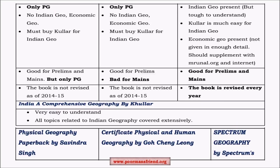Looking at previous exam trends: Savindra Singh helps for both prelims and mains but only for physical geography. Goh Cheng Leong is not ideal for mains because not every concept is in enough detail and many topics are outdated. Spectrum Geography is good for both prelims and mains. Most importantly, Spectrum Geography is revised every year to meet changing trends, whereas Savindra Singh and Goh Cheng Leong are not updated regularly and lack important concepts according to current trends.